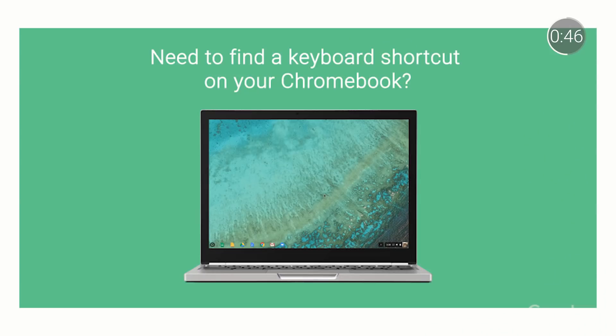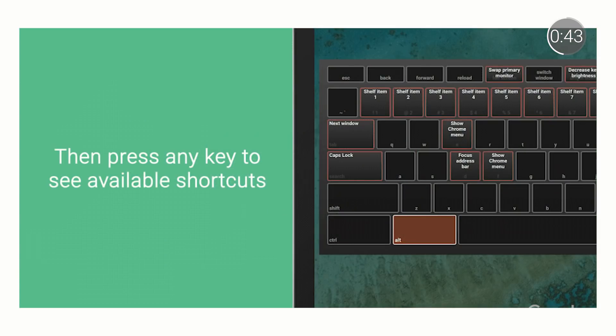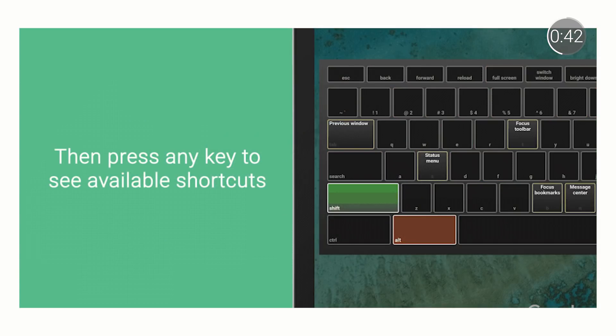We love the ability to see all keyboard shortcuts, and so does Charlie Love. Choose Control-Alt and the question mark to check out all the potential keyboard shortcuts you can use with your Chromebook.